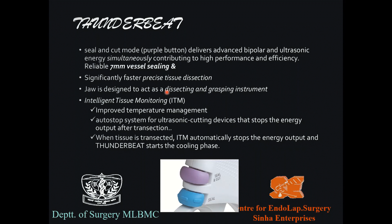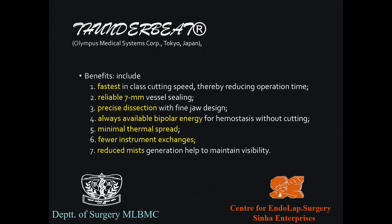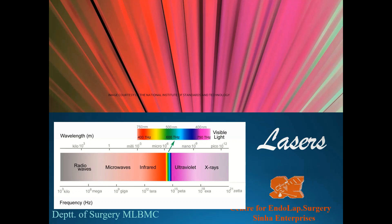Unlike a Harmonic blade, which is primarily a grasping instrument for coagulation, the Thunderbeat jaw can also be used for dissection. It has intelligent tissue monitoring with auto-stop for ultrasonic cutting — the energy output stops automatically after transection is complete, entering a cooling phase. Benefits include the fastest in-class cutting speed, reliable 7 mm vessel sealing, precise dissection with fine jaw design, always-available bipolar energy, minimal thermal spread, fewer instrument exchanges, and reduced mist generation for better laparoscopic visibility.